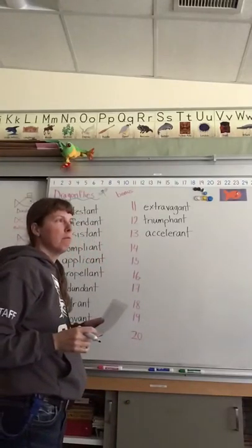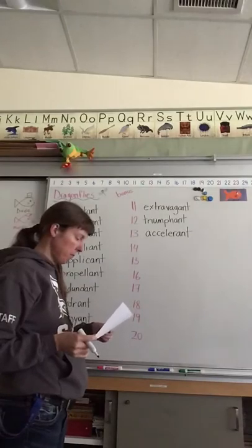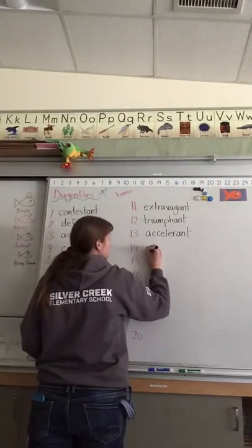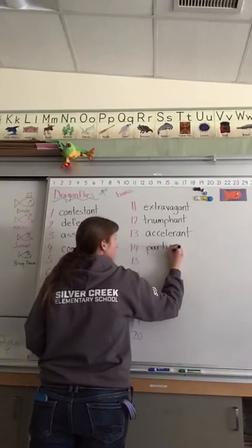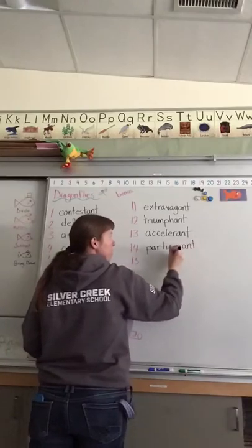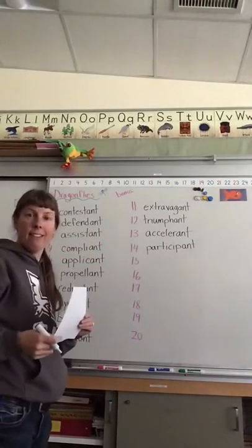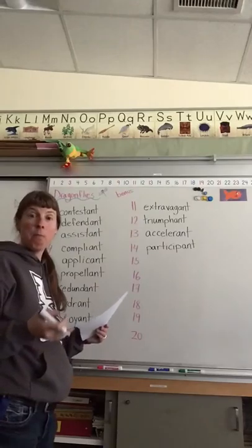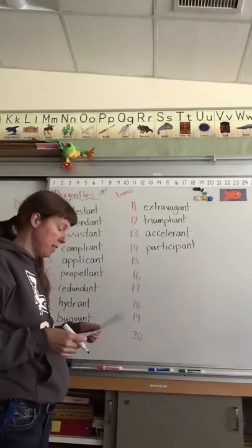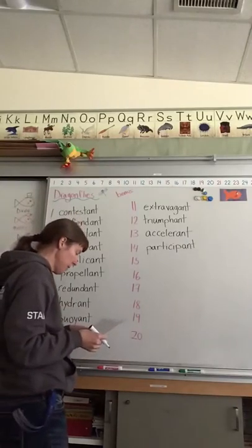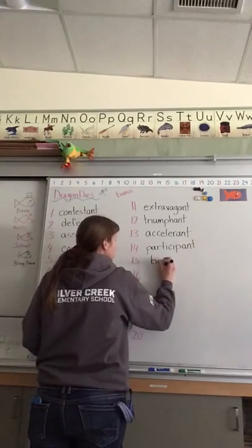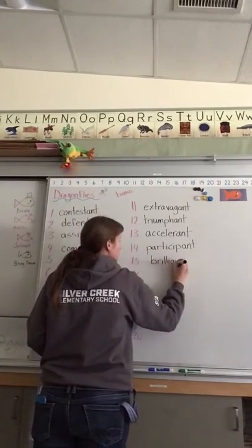All right. Number 13, accelerant. An accelerant is something that's going to speed something up or make it go faster or make it accelerate. So it's a thing that makes something go faster. Notice it's got the two C's. The first C says C because it's got a C after it. The second C says S because it's got an E after it. So if you're going to break the syllables, ac-cel-er-ant. Gas would be an accelerant for fire.